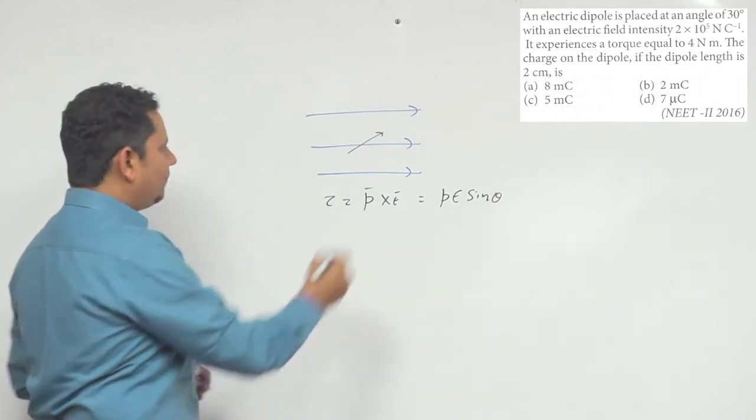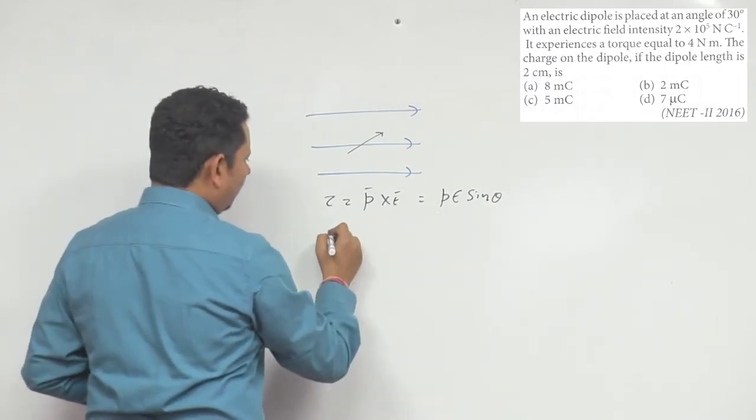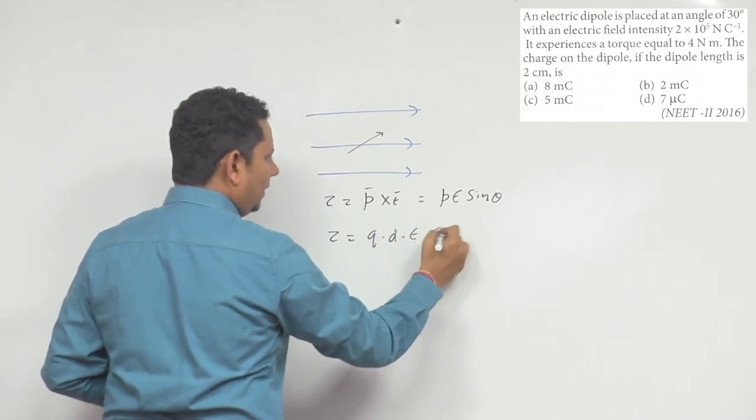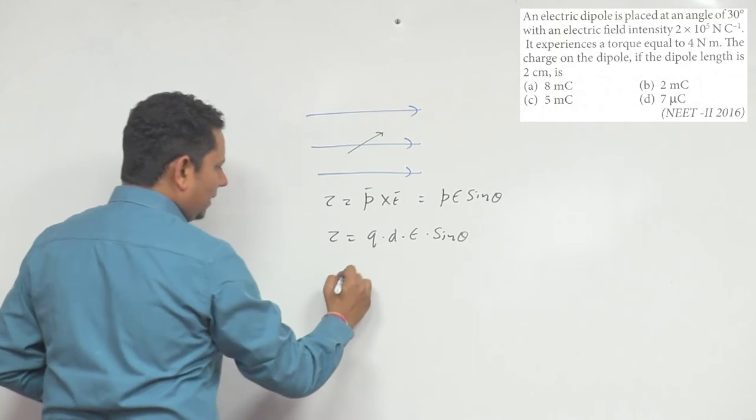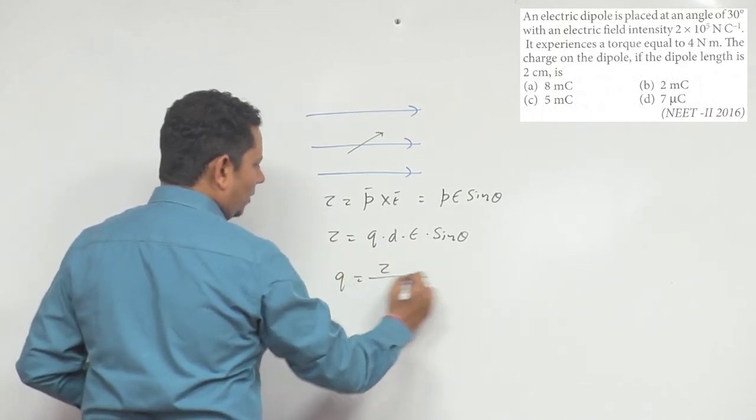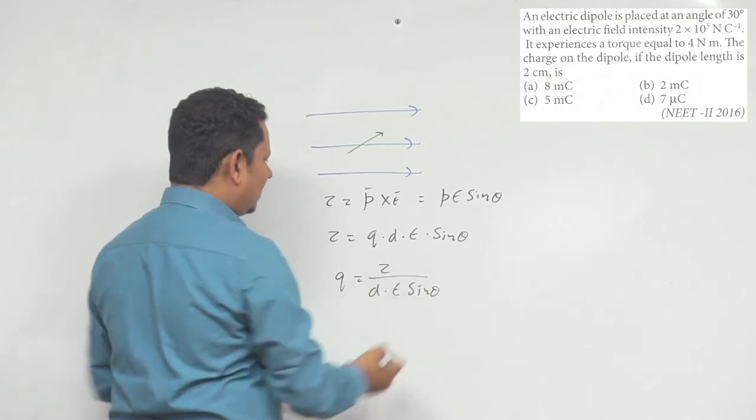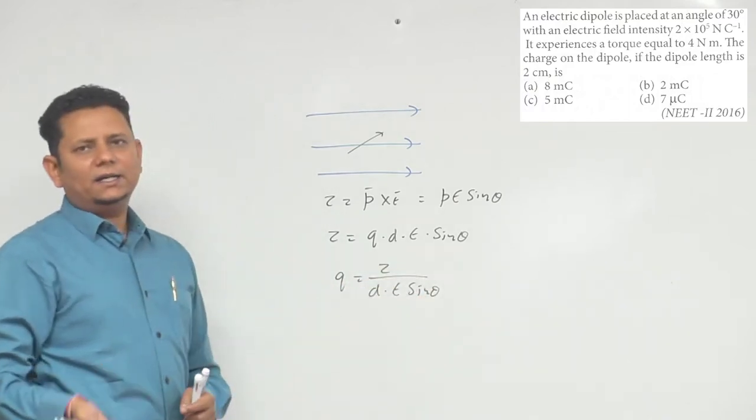P equals q d, so torque equals q d E sin theta. All the data is given to us; we just need to substitute the data and find the value.